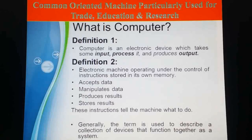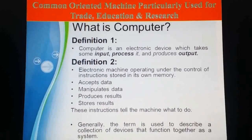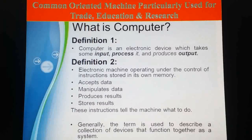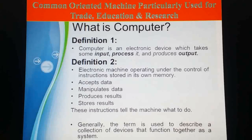First of all, we have to know the full form of computer. C for Common, O for Oriented, M for Machine, P for Particularly, U for Used for, T for Trade, E for Education, and R for Research. That means a computer can be used for common purpose as well as for scientific purpose also.